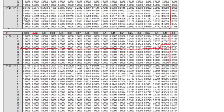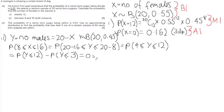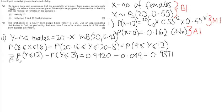Doing the same for P(Y ≤ 3), ruling across from row 3 using a piece of paper to avoid mistakes, the reading is 0.0049. So we subtract 0.0049 from 0.9420. Having read the tables, P(Y ≤ 12) = 0.9420, minus P(Y ≤ 3) = 0.0049, giving an answer of 0.9371. The probability that the number of females is between 8 and 16 is 0.9371.